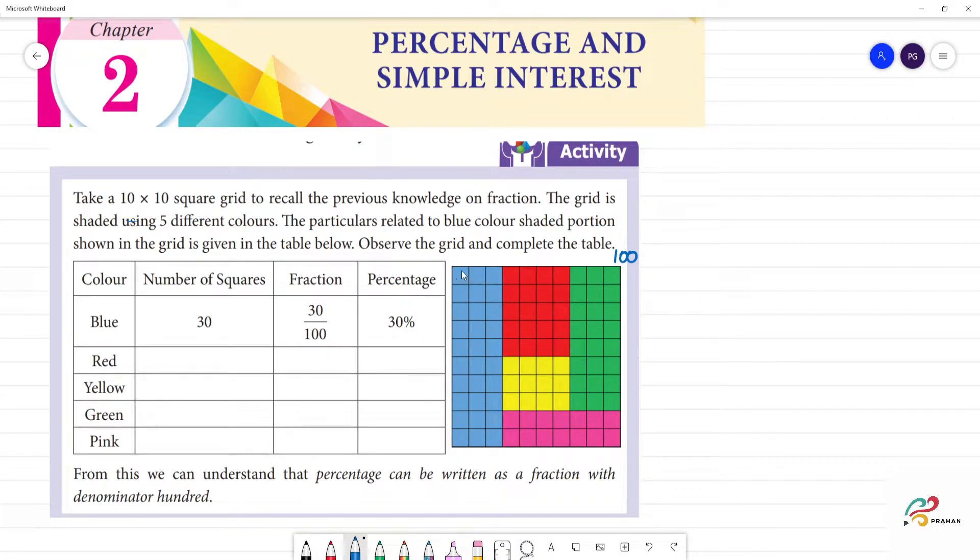Blue: 1, 2, 3, so 3 rows. 3 into 10 is number of squares, 30. So fraction is equal to 30 by 100. Percentage is 30 percent. Percent is equal to 1 by 100. 30 by 100 is equal to 30 percentage.